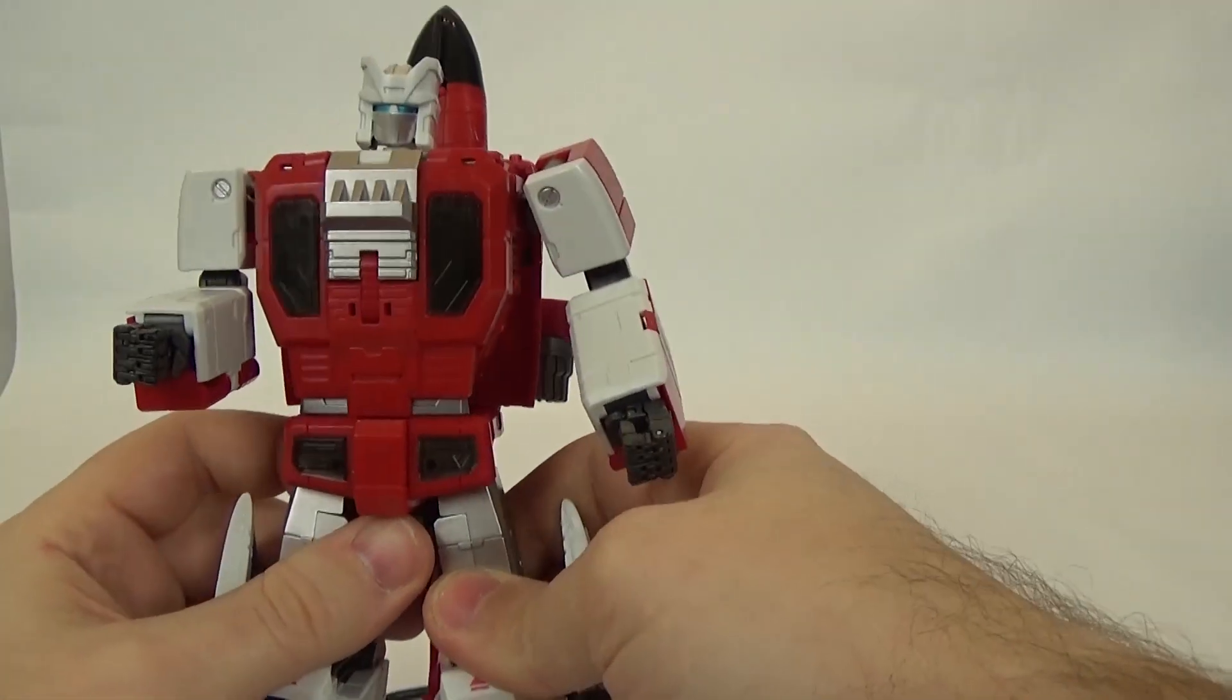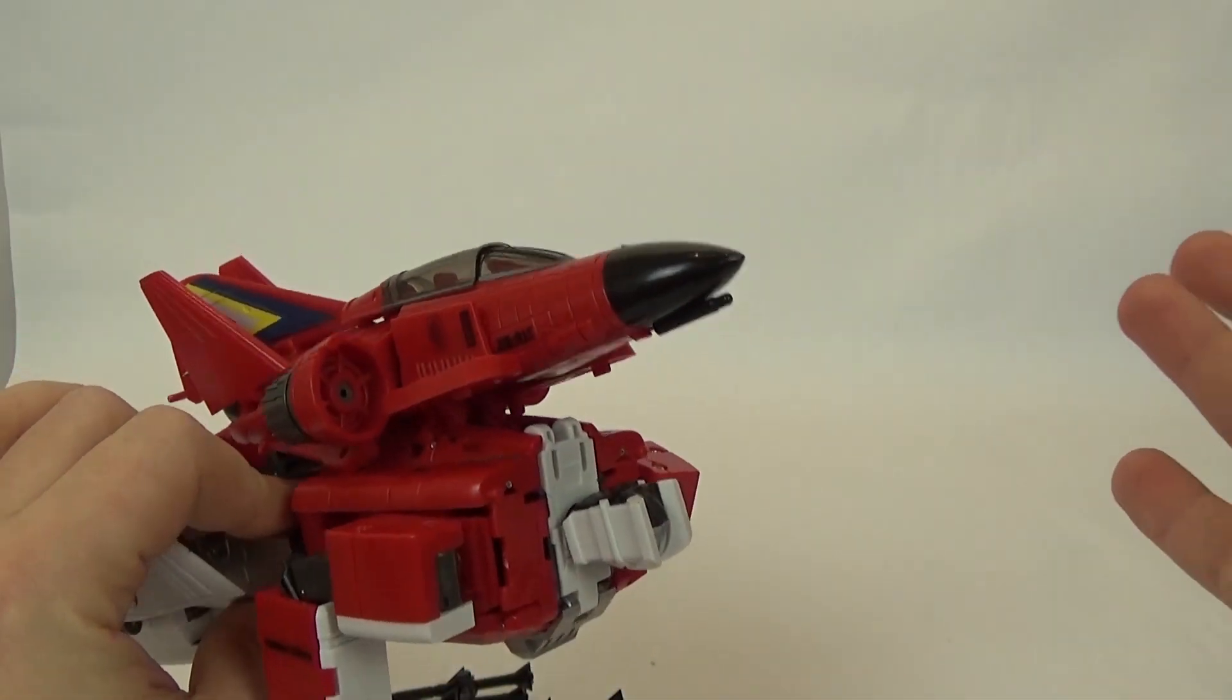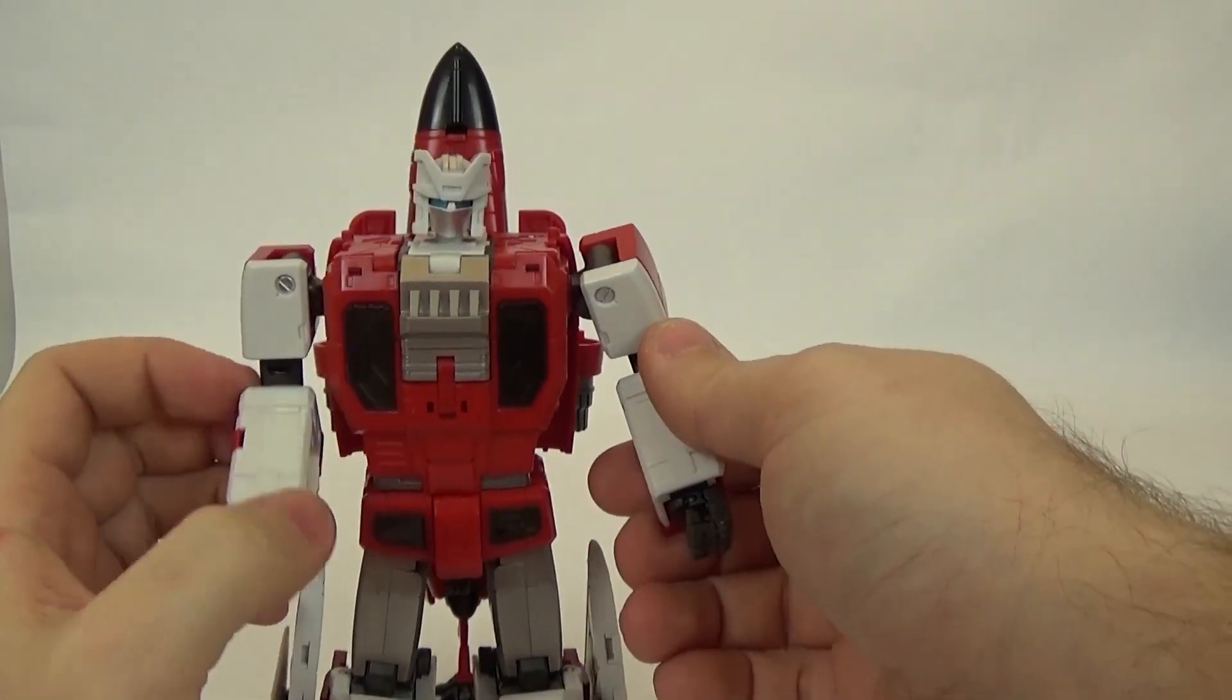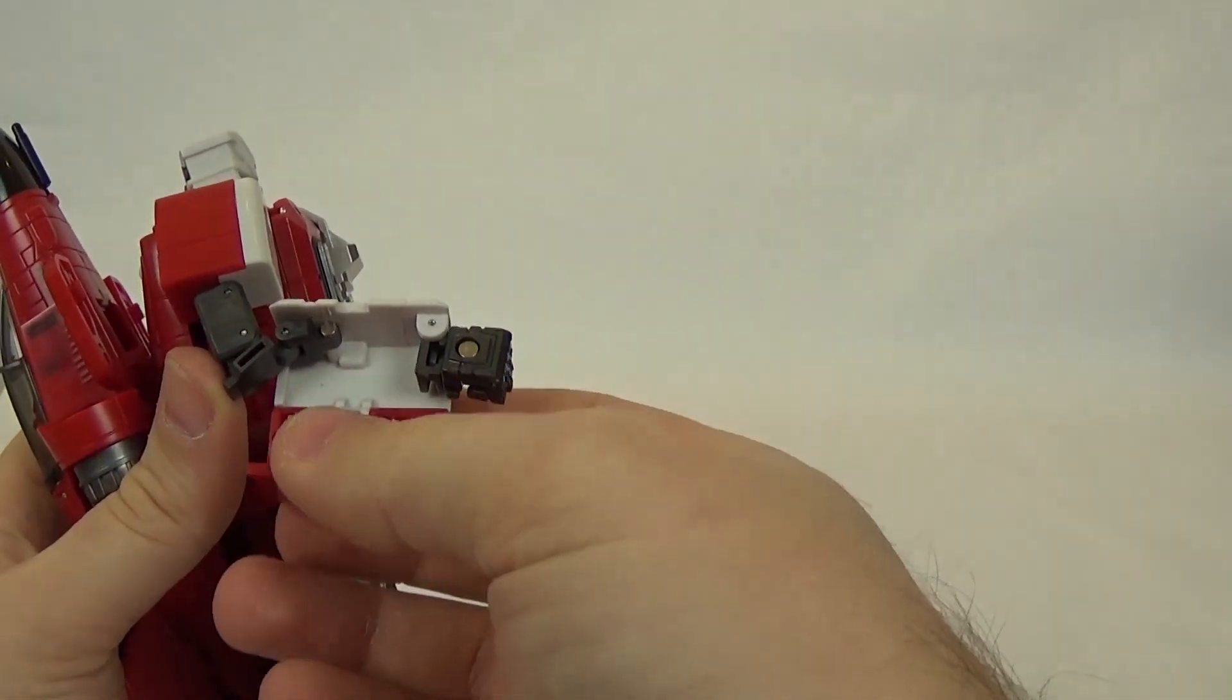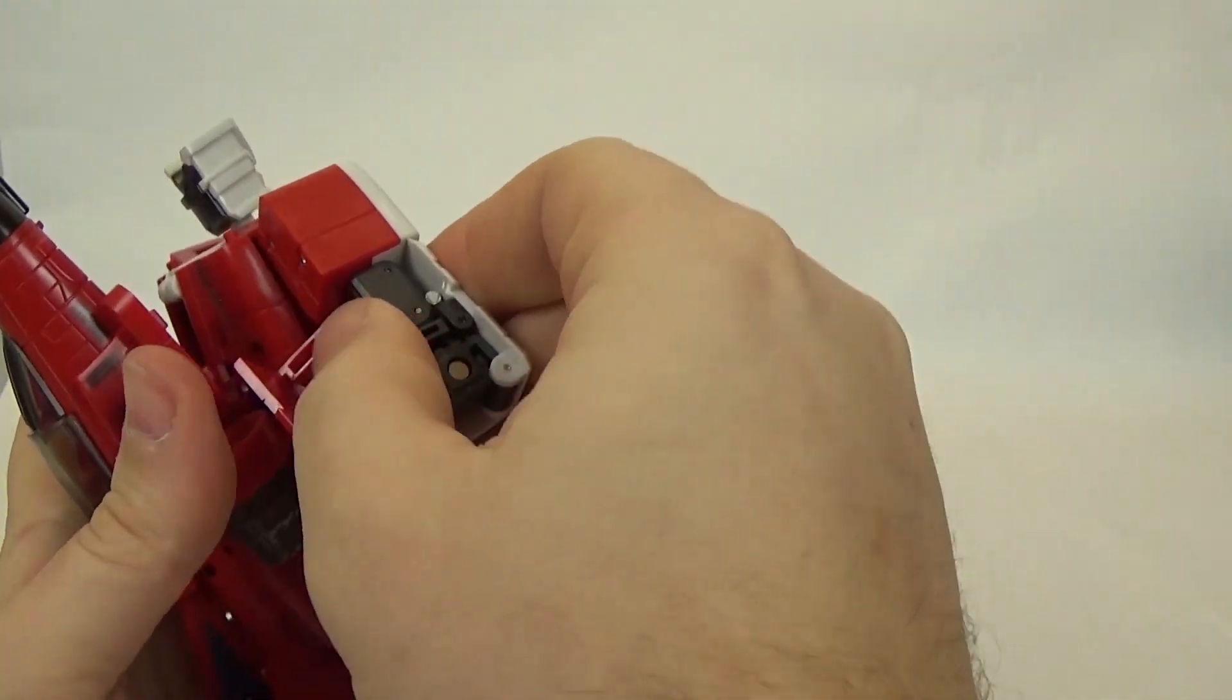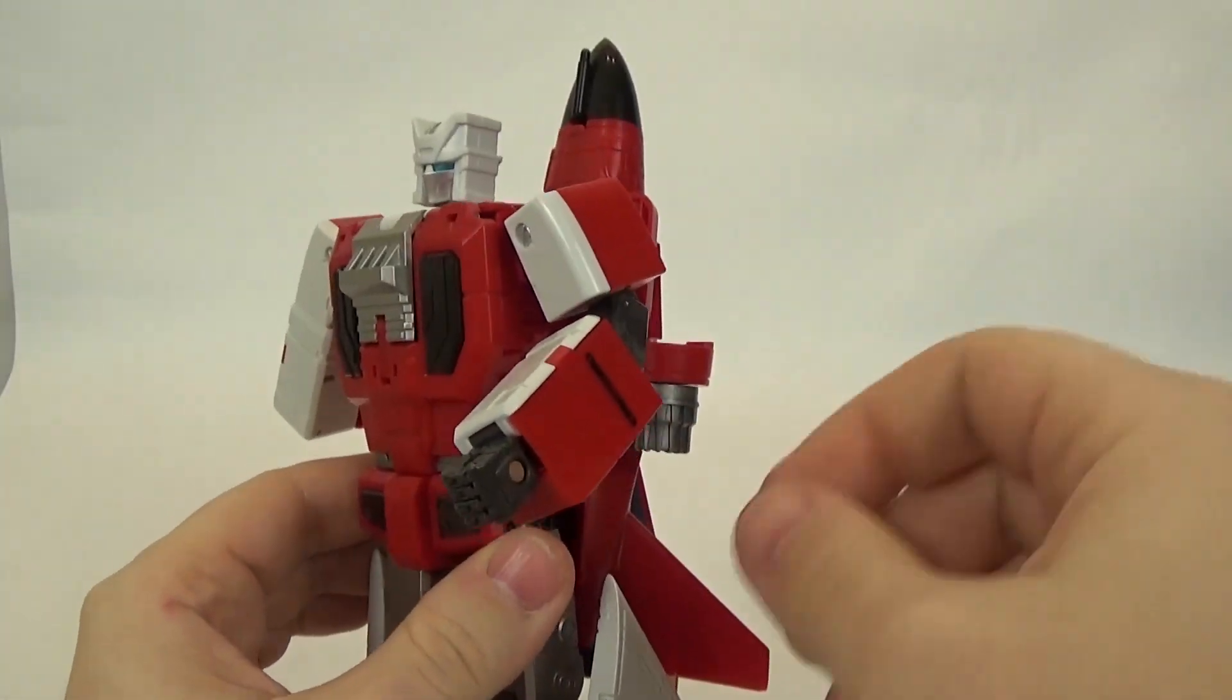So, their hands could be a lot better. One of the other things I noticed is that on this figure, let's go ahead and just get this cleaned up for transformation. The first thing you want to do is open up the panels here, flip the hand in, and then just collapse the arm.